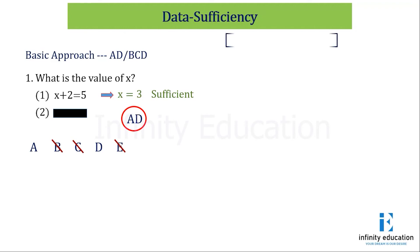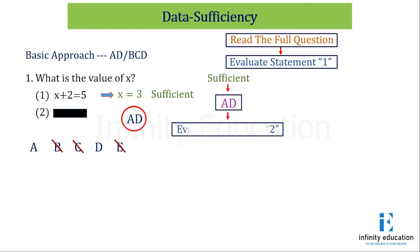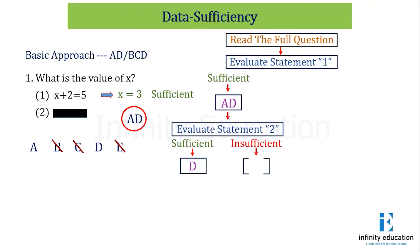Let's see the algorithm. First, read the full question and figure out what is being asked. Then evaluate statement 1. If it is sufficient, the answer is in AD. After getting AD, evaluate statement 2. If statement 2 is also sufficient, the answer is D — because D is when statements 1 and 2 are individually sufficient. If evaluating statement 2 gives insufficient, the answer is A — because A is when statement 1 alone is sufficient but 2 alone is not.